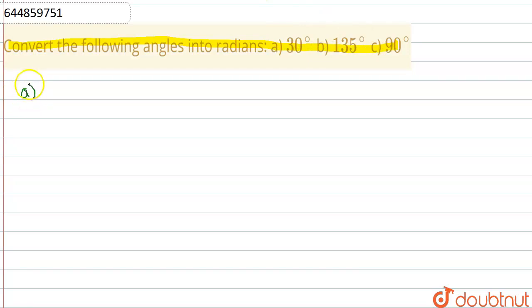So the first part is a) theta equals 30 degrees. In order to solve this, we will multiply the given angle with pi by 180 degrees. Now 30 will get cancelled with 180, 36 are 180. So we will get pi by 6 as the first answer.